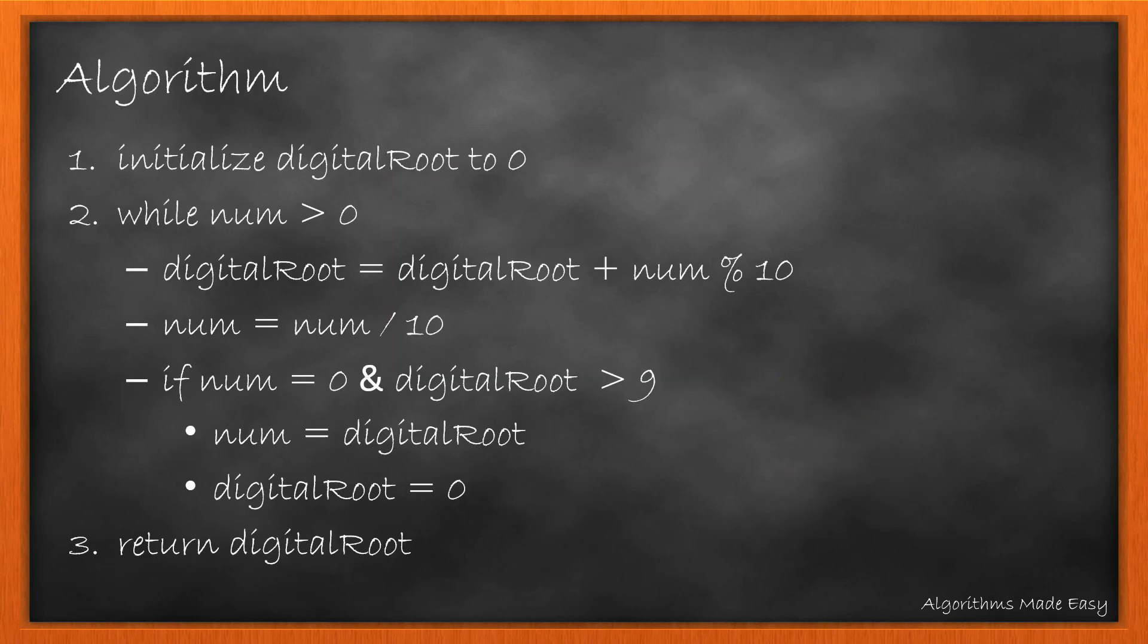The algorithm here is pretty simple. We first initialize digital root that will store the result to 0 and loop while the number is greater than 0. We update the result with sum of result and the last digit of the number while we also update number by removing its last digit.